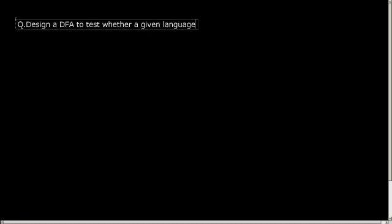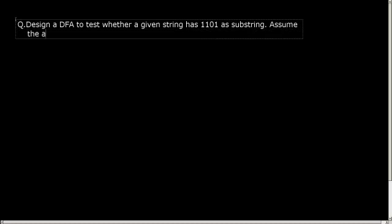The next question that we are going to solve is: Design a DFA to test whether a given string has 1101 as a substring, with the alphabet set assumed as 0 comma 1.